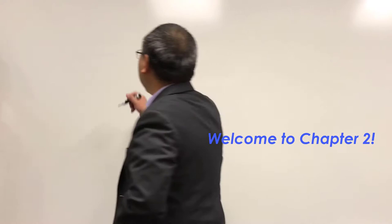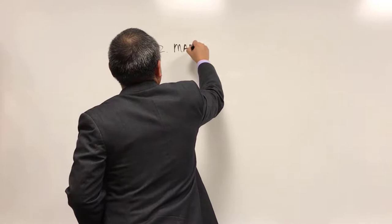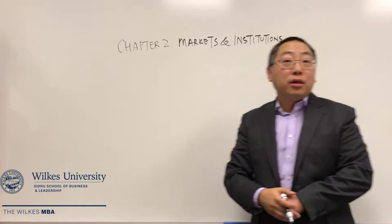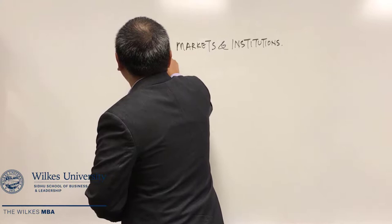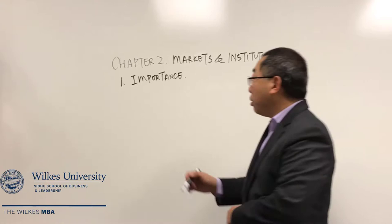Hi everyone, it's Megan. I'm going to discuss with you the second chapter we are going to see in this week's class discussion: Chapter 2, Financial Markets and Financial Institutions. They are important because they make up the external environment for the business. In the first section of the class notes, we discuss the importance of these two items.